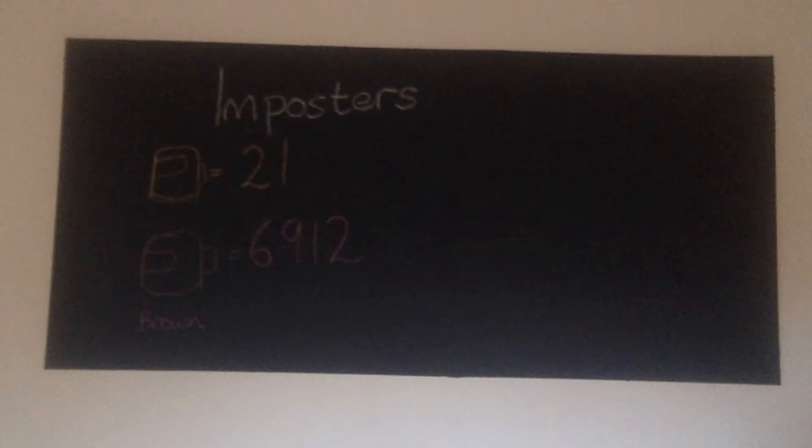So the imposters were the orange one, the answer should have been 21, and the brown one, which should have been 6912.